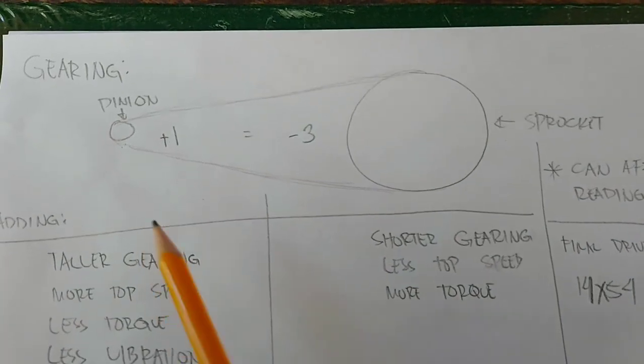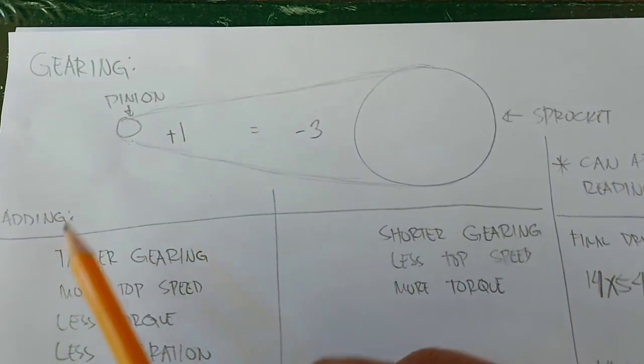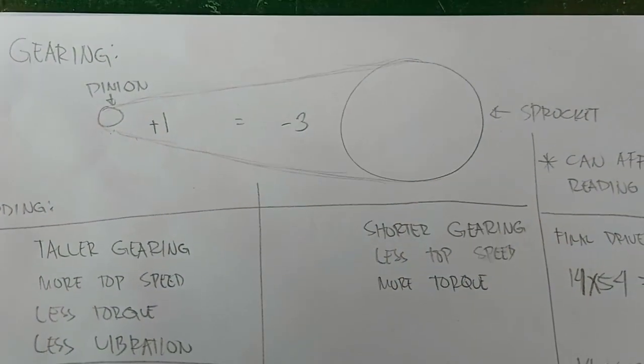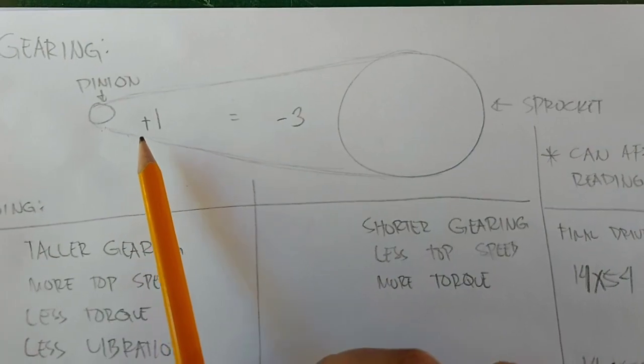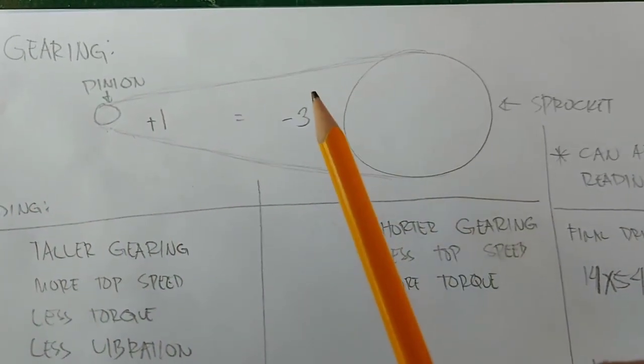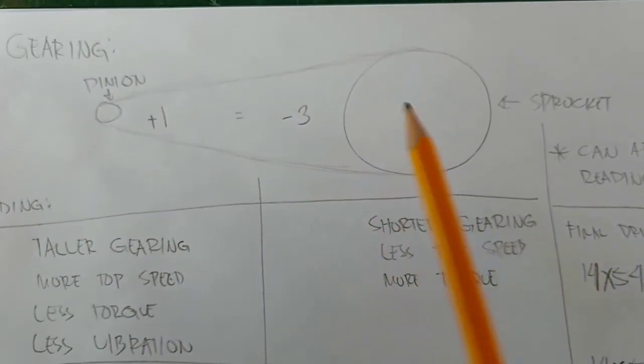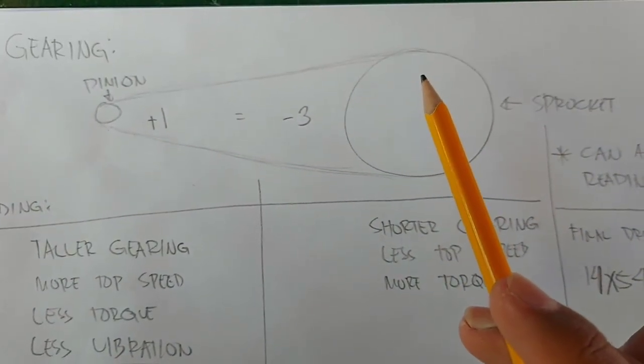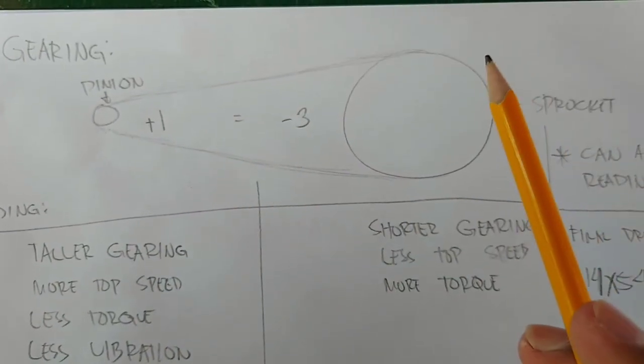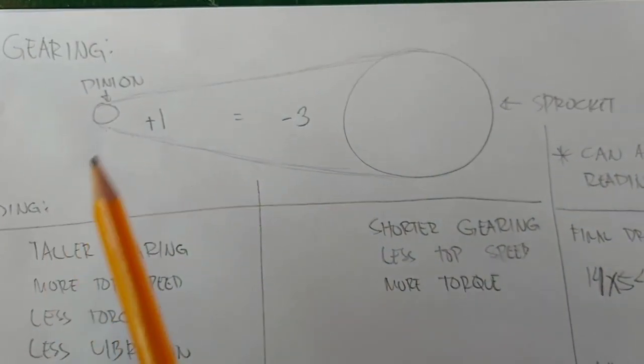Fundamentally, if you add one tooth to your pinion, the equivalent is minus 3 on the sprocket. So if you reverse it, if you minus 1 on your pinion, the equivalent is plus 3 on the sprocket. So vice versa, plus 3 on the sprocket means you minus 1 on the pinion, and minus 3 on the sprocket means you plus 1 on your pinion.